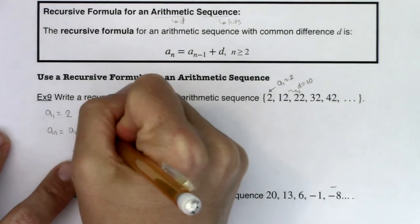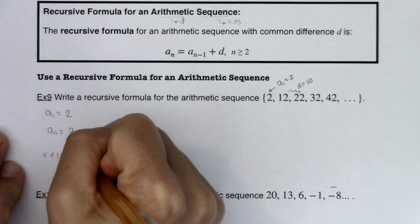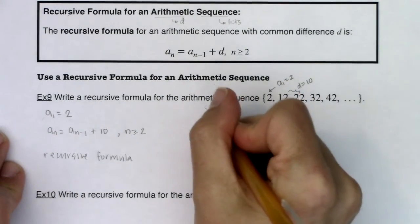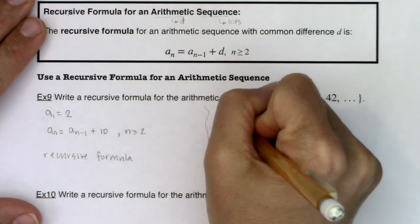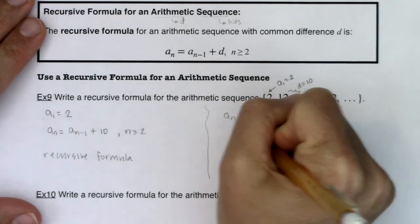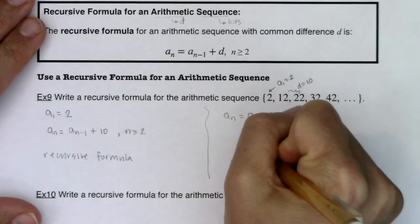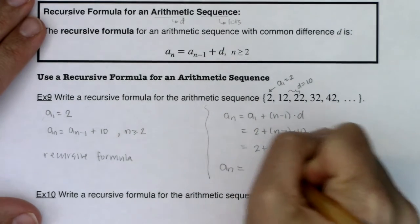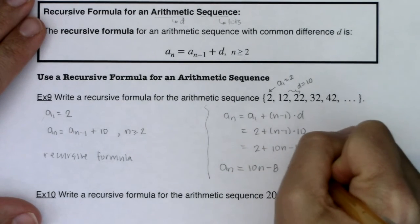Alright, so a sub n minus 1 plus 10. Now again, this is the recursive formula. Which is great, that's what I was asked for. I just want to juxtapose that with the explicit formula. So if we had done the explicit formula, that's this one. You would have told me this was 2 plus n minus 1 times 10. And you would have distributed the 10 and said this was 10n minus 10. So ultimately, you would have said this was 10n minus 8. This is the explicit formula.